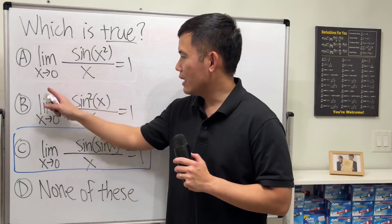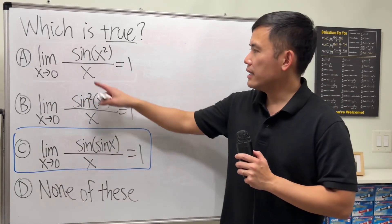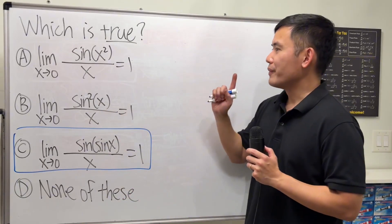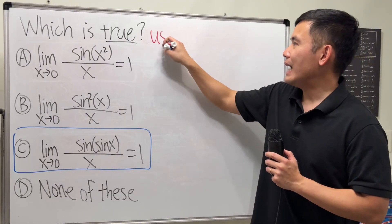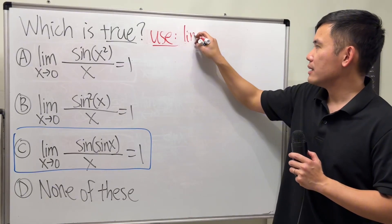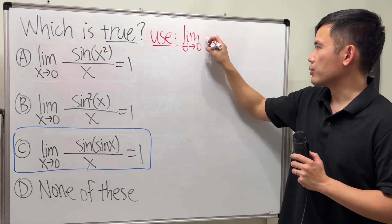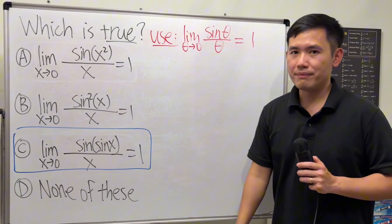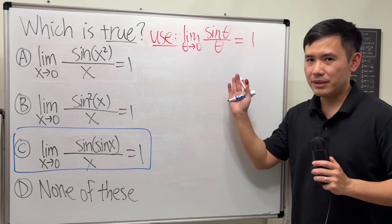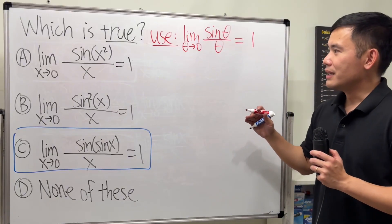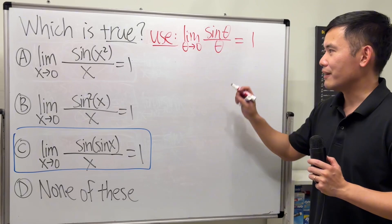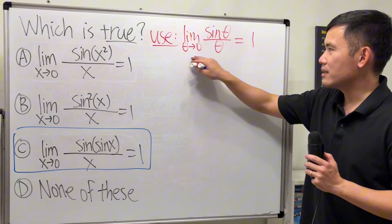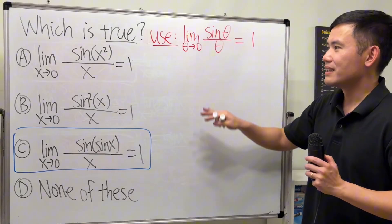Firstly, notice that there are all limits as x approaching 0, and then they all have sine, and the denominator is all x. So, the key for this question is we will have to use the limit as theta approaching 0 of sine theta over theta is equal to 1. And this is a very standard limit that you should have seen a geometric proof of it, and you should have done this before you start doing calculus derivative. But anyways, we are going to take this as a fact, and we are going to use it.